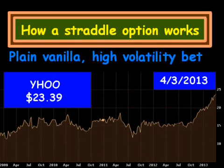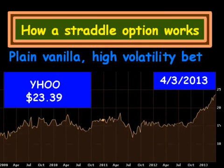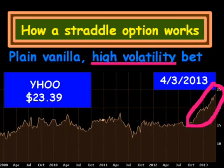In front of me, I have a chart of Yahoo Stock. At the time this was done, it was April 4, 2013, and the price was at $23.39. For the straddle option to work, we need the stock price to go in one direction or the other.